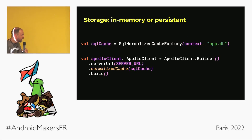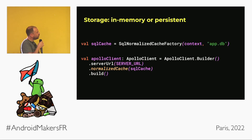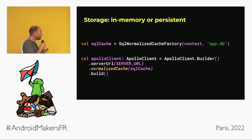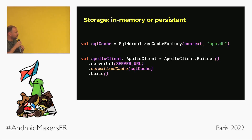There's also a persistent version of the cache called SQL cache, because under the hood it uses SQLite. It's a really simple schema — essentially a key-value store.